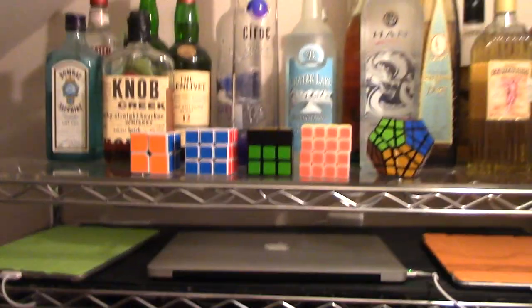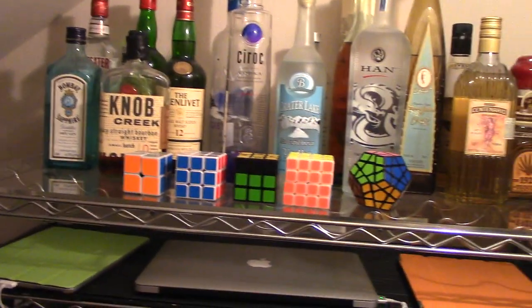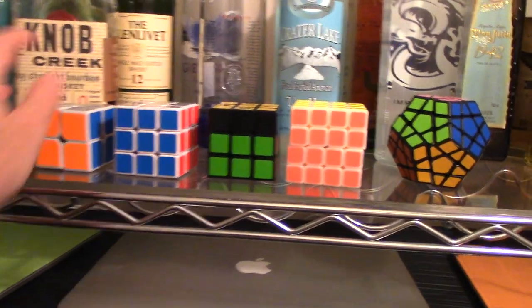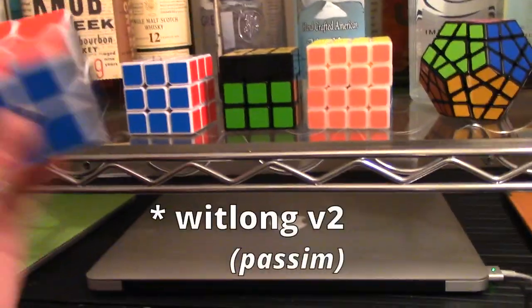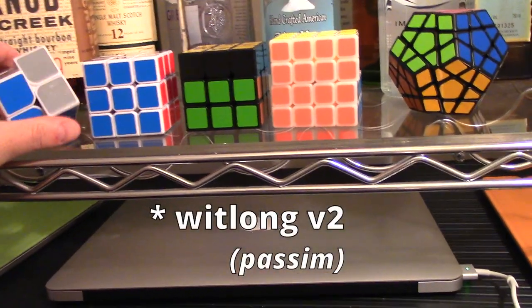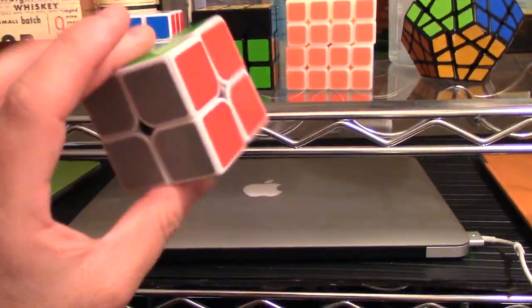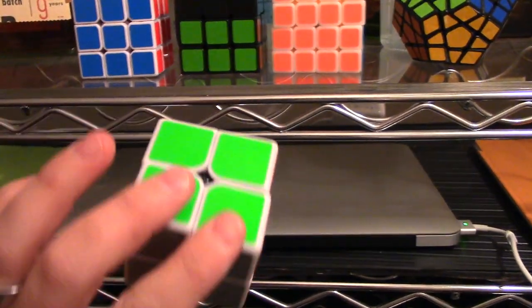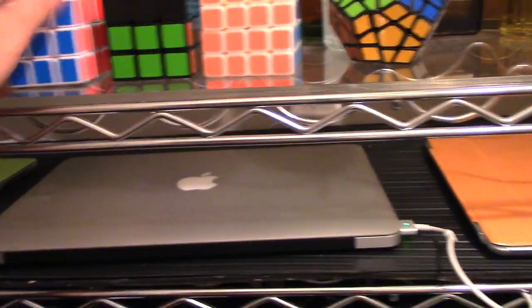The first stop on my tour would be our downstairs coat closet, which has the liquor high enough that the kids can't get to it, and it has my cubes that I use downstairs. This is a Shang Shao 2x2 with my gray on top, black on bottom, Fulbright color scheme that you've seen on my 3x3s.